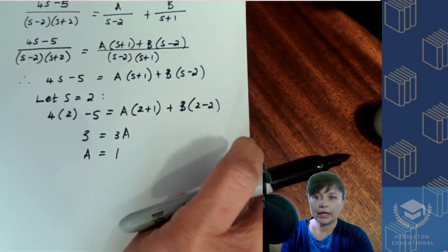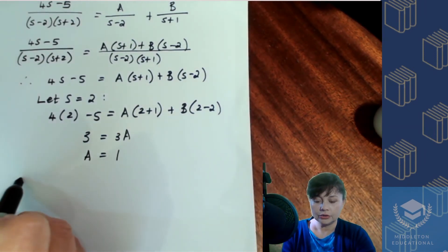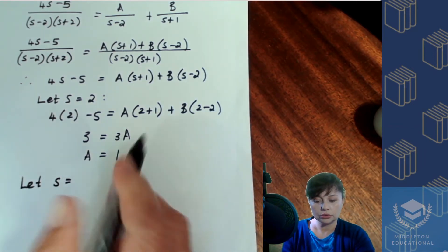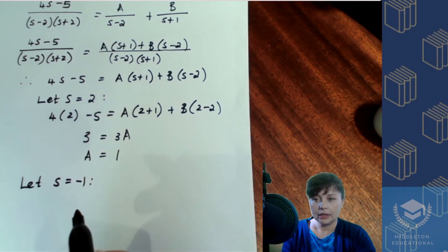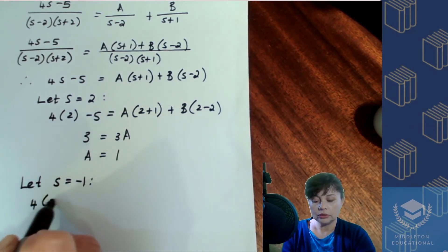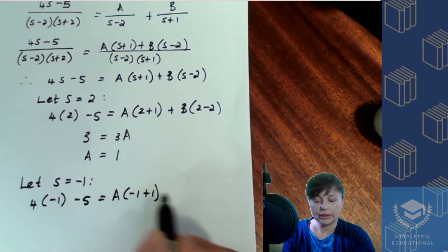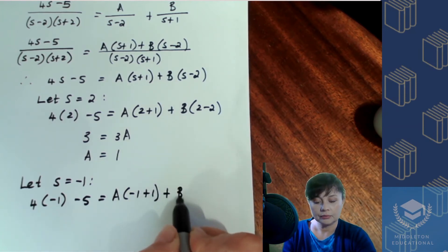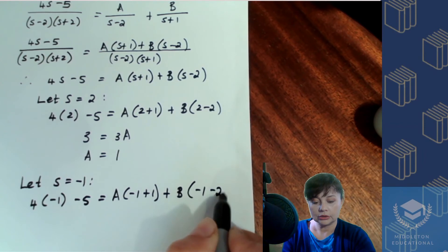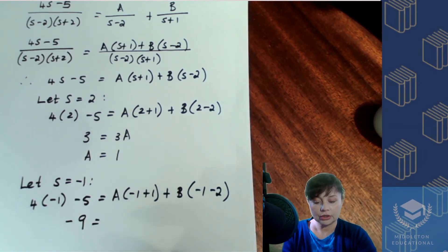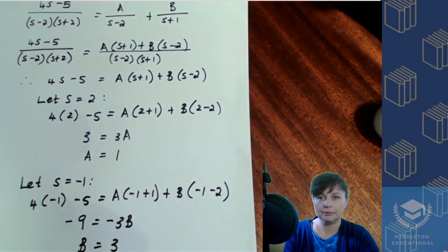Then in order to find your b value, I'm going to say let s equal to minus 1. So we'll have 4 times minus 1 minus 5, a times minus 1 plus 1, which is going to add up to 0, plus b times minus 1 minus 2. That's going to be minus 4 minus 5, which means it's minus 9. That adds up to 0. That's going to be minus 3 times b, which means that b is going to be 3.